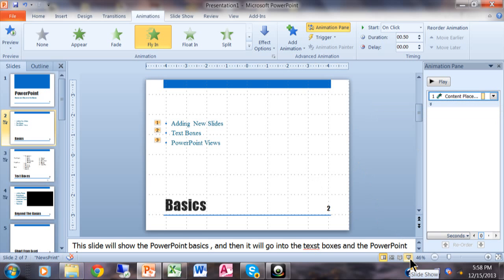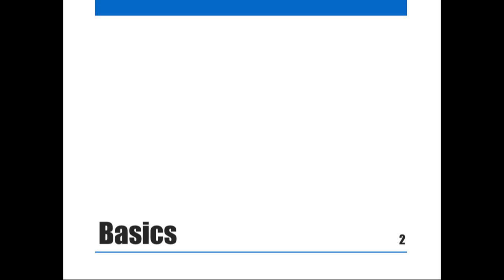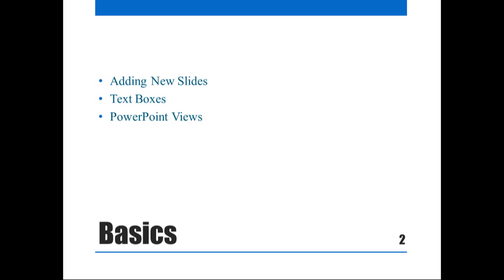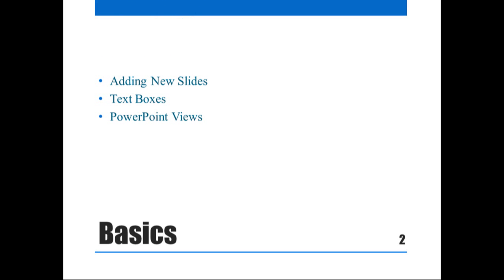I'll leave the text animation on mouse click so I can control each line manually. Let me run that slide — notice the text won't come in until I click. I click for my first important point, click again for my second, and again for my third. This is how you make text appear one line at a time: animate the text box with Fly In and use mouse click to control the pacing.